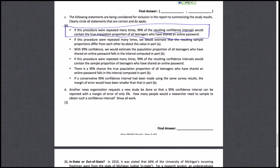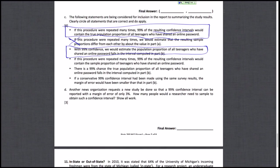The second statement says we would estimate the sample proportions to differ from each other by about the value in part A. They would differ from the mean, not necessarily from each other, so this is not a correct interpretation of the standard error — that one is false. The fourth statement says if the procedure were repeated many times, 99% of the resulting confidence intervals would contain the sample proportion. The problem is the sample proportion is always the midpoint of your confidence interval — it's in there 100% of the time, not 99%. So that one is also false.